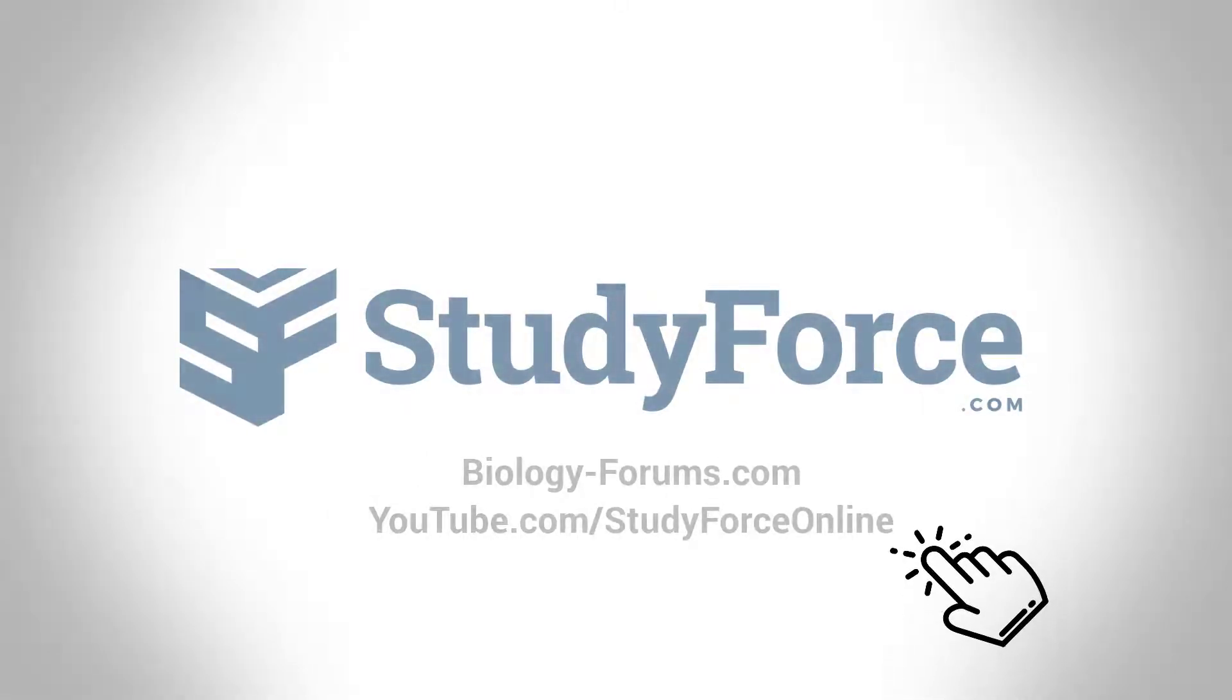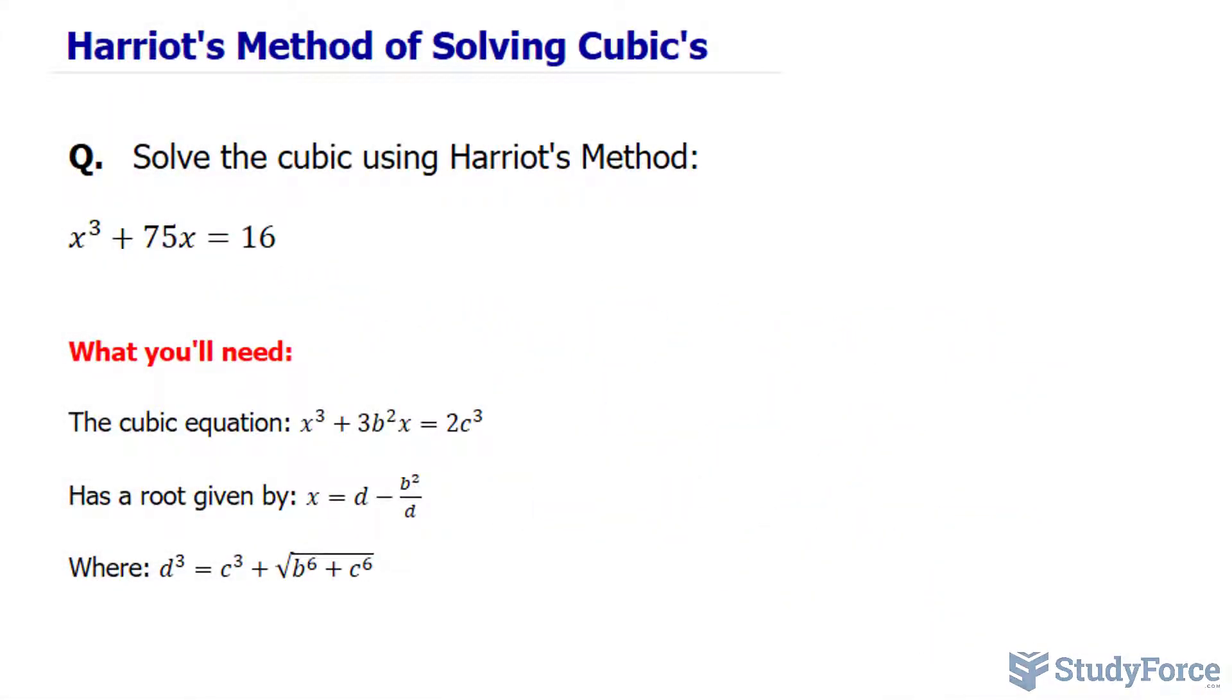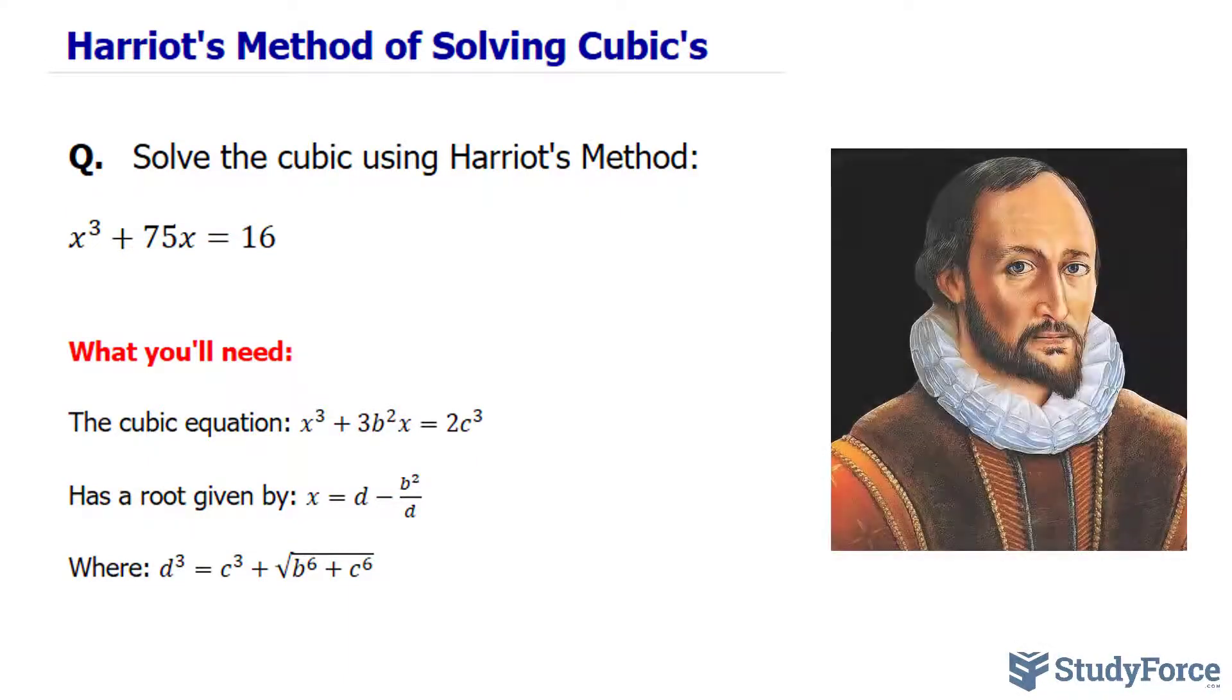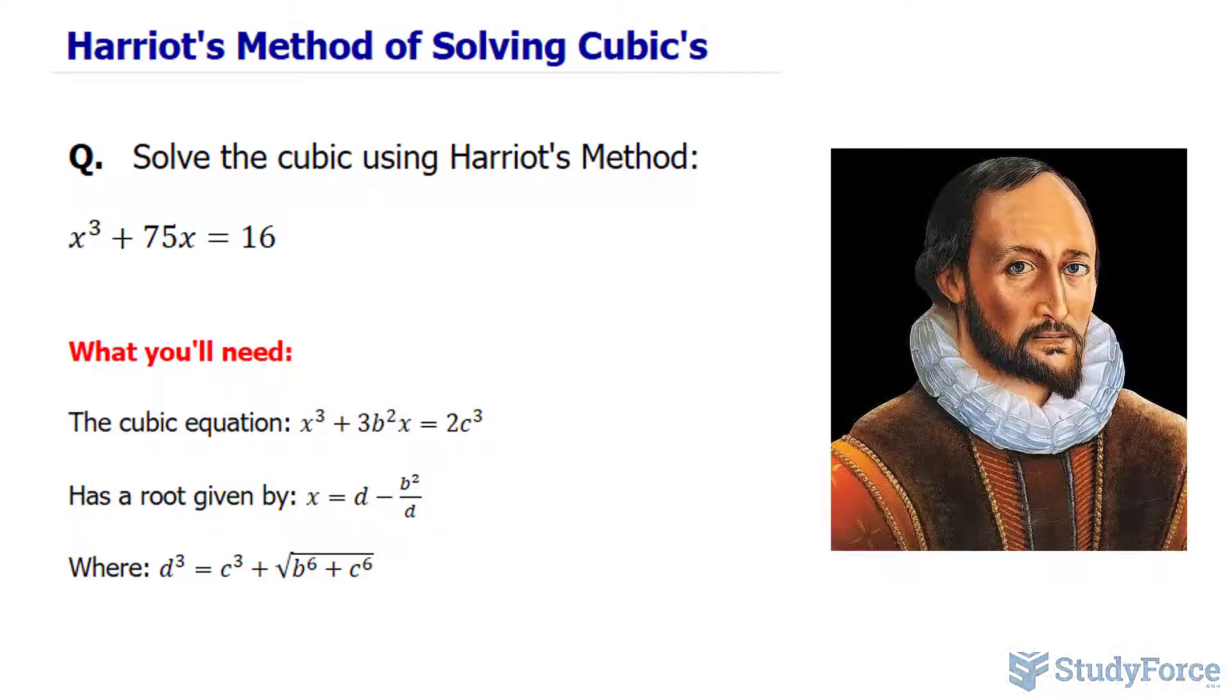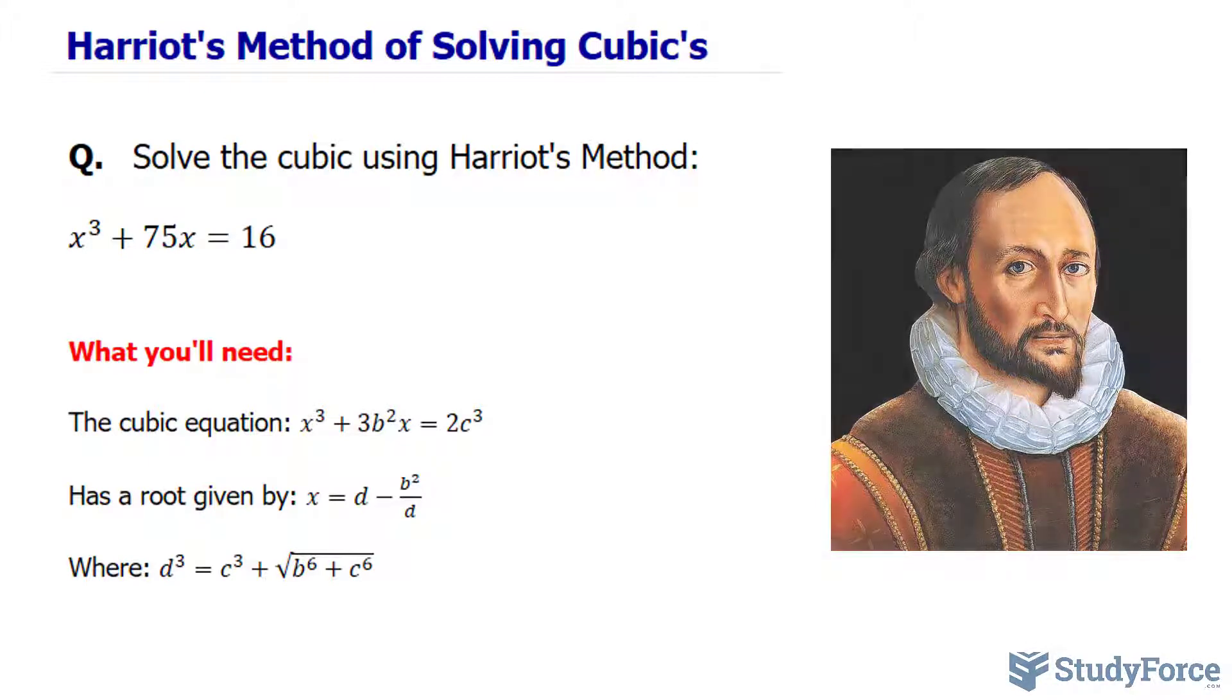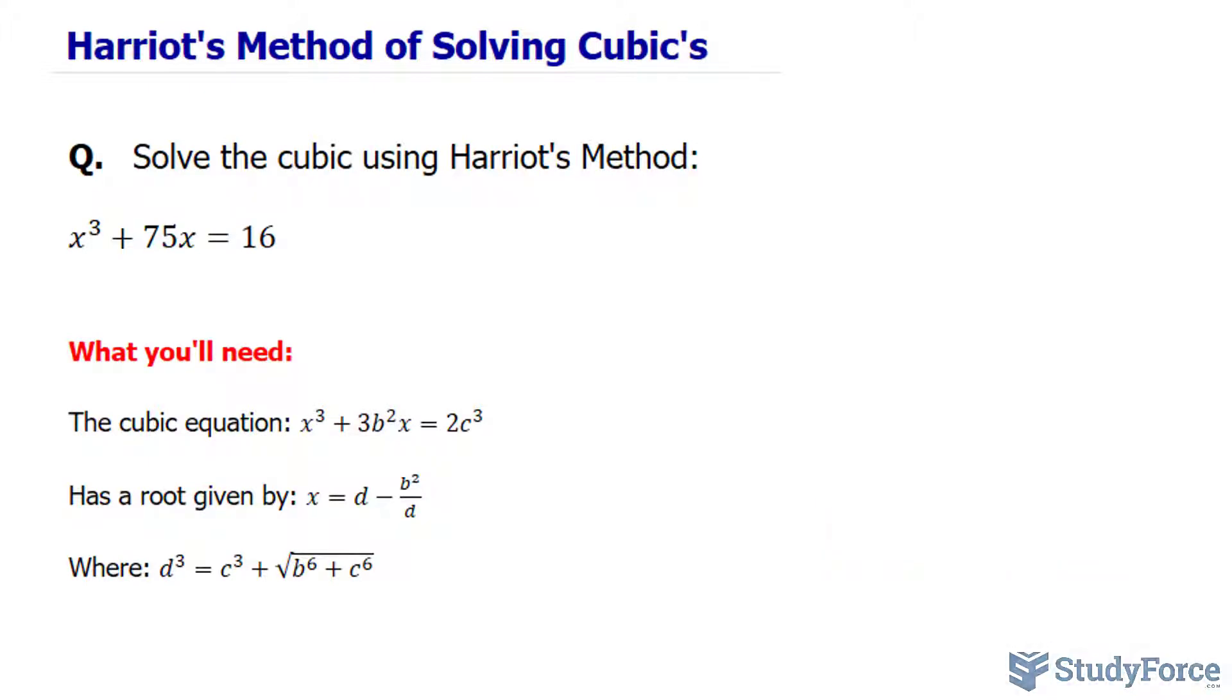In this tutorial I'll show you how to use Harriot's method to solve cubics. This method was invented a long time ago by the mathematician Thomas Harriot who lived between 1560 and 1621. He's also responsible for having created the inequality symbols for less than and greater than.